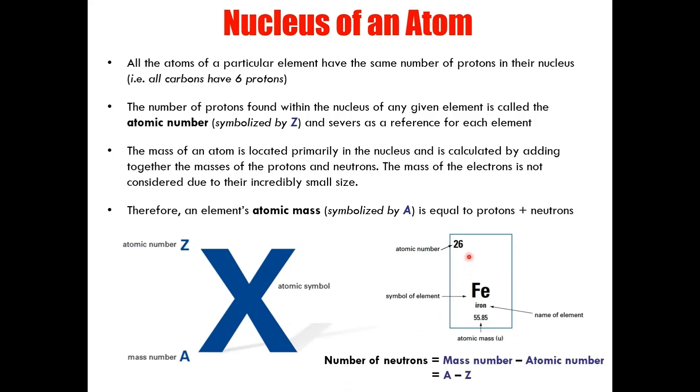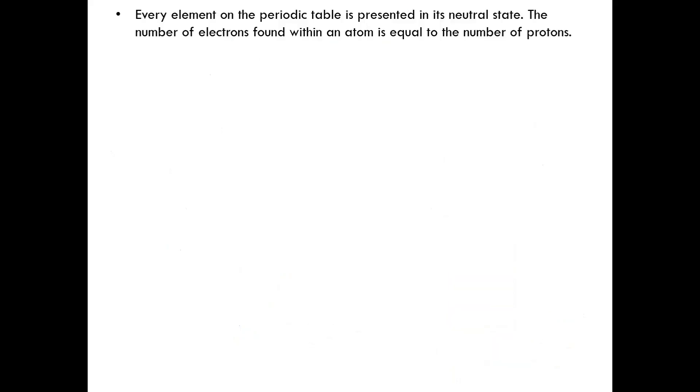Now, because the atomic number is the number of protons, and the atomic mass is the number of protons plus neutrons. To get the number of neutrons, you need only take the atomic mass and subtract the atomic number, A minus Z. It is important to note that every element on the periodic table is presented in its neutral state. That essentially means that for any given element, the number of electrons found within an atom is actually equal to the number of protons. It is because of this that the atomic number is not only equal to the number of protons, but also equal to the number of electrons. Remember this is only the case for atoms in their neutral state before they react to form compounds.